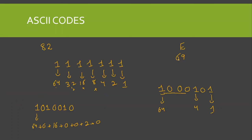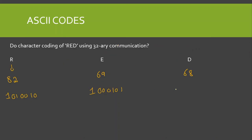Finally I have D with decimal value 68. Using the same procedure, 68 = 1000100. The first bit has weight 64 and the bit with weight 4 is also 1, so 64+4=68. That is why D equals 1000100 in binary. Now I have decoded all three letters into binary.